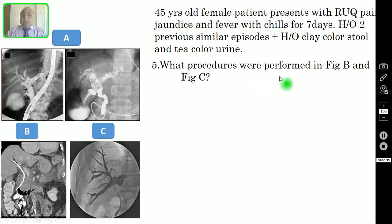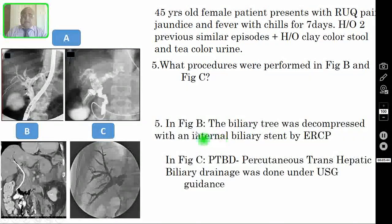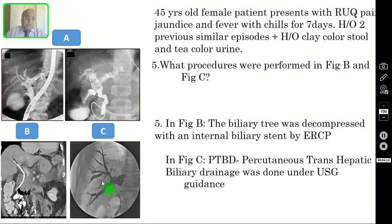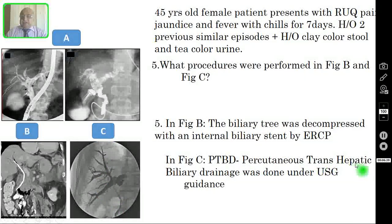Question number five: what procedures were performed in figure B and figure C? In figure B, the biliary tree was decompressed with an internal biliary stent introduced by ERCP. In figure C, you are seeing percutaneous transhepatic biliary drainage (PTBD), done under ultrasound guidance. You can see the dilated intrahepatic biliary radicals and a Chiba needle puncturing them — bile gushes out through the needle, or a tube can be placed for drainage.